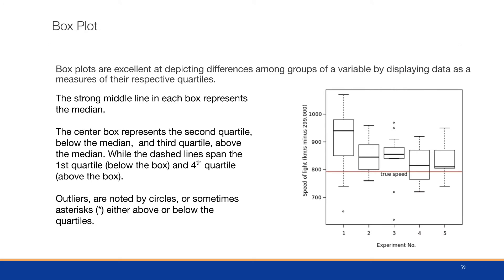Box plots are an excellent way at depicting differences among groups of a variable by displaying data as a measure of their respective quartiles. The strong middle line in each box represents the median. The center box represents the second quartile below the median and the third quartile above the median, which we call the interquartile range.